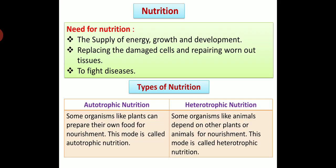Second, heterotrophic nutrition. Some organisms like animals depend on other plants or animals for nourishment. So this type of mode is called heterotrophic nutrition. For example, all animals.